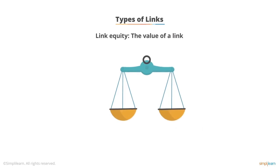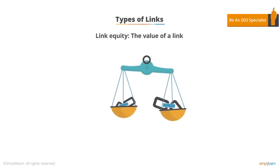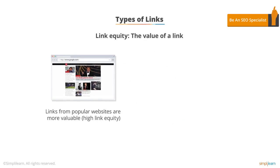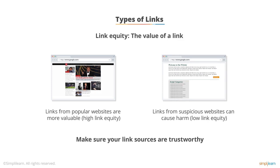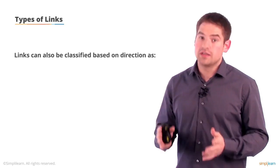With link building, it's very important to understand that not all links are created equally. A link coming from the homepage of CNN is going to provide a lot of what we call link equity — it will have a lot of popularity metrics tied to it and help you rank higher. Whereas a link from a spam blog is not going to be particularly helpful and could actually hurt you. Make sure you can stand behind the source of the link, whether it's a trusted government website or a site you'd actually visit yourself.